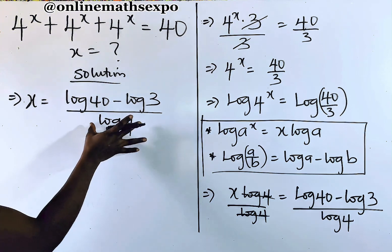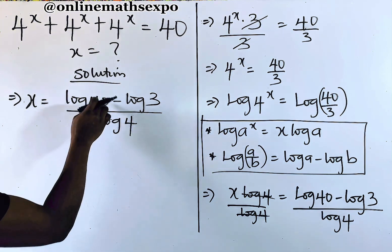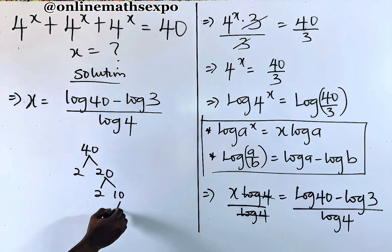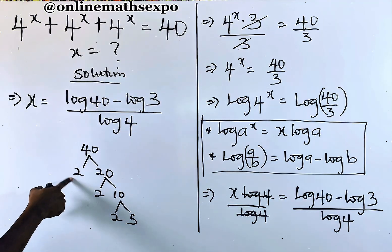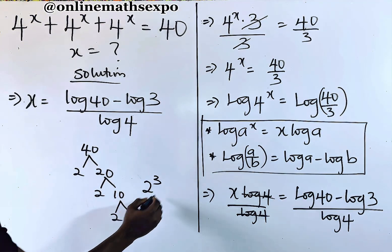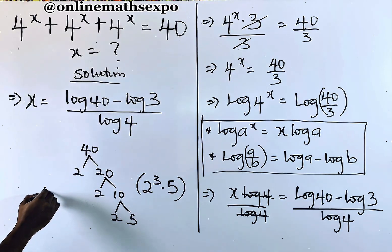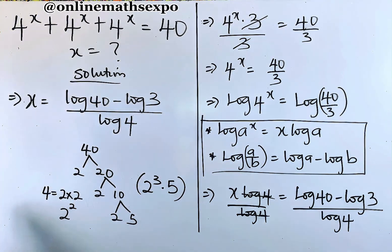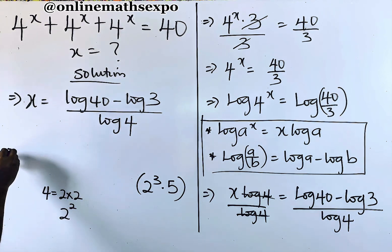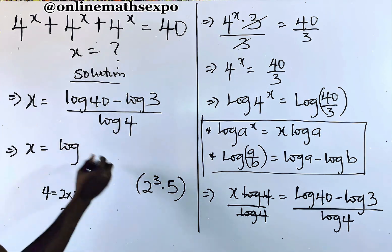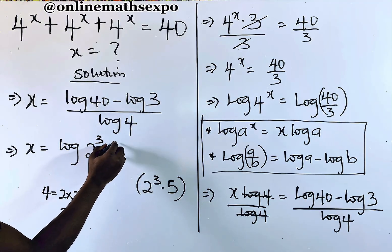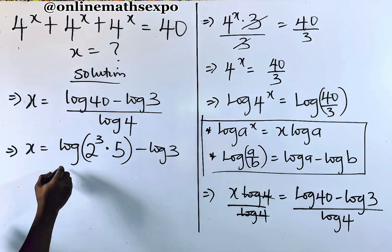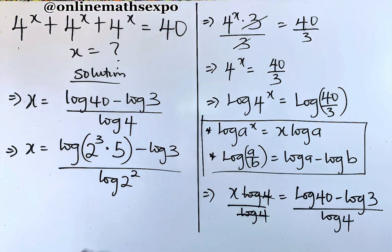Now at this point we cannot leave it this way — we need to simplify. Remember that 40 is the same as 2 times 20; 20 is 2 times 10; and 10 is 2 times 5. So 40 is 2 raised to the power of 3 multiplied by 5. And 4 is 2 times 2, which is 2 to the power of 2. So we replace these: x is equal to log of 2 to the power of 3 times 5, minus log of 3, all divided by log of 2 raised to the power of 2.